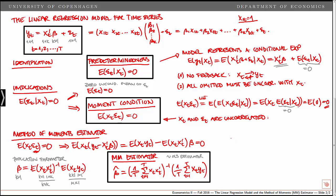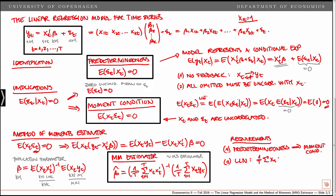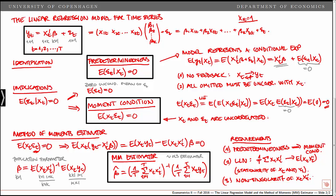Note that there were three requirements. First, we need the assumption of predeterminedness, which implies the moment condition used to derive the estimator. Second, for the sample averages to converge to the population expectations, we need a law of large numbers to hold — that ensures 1/T times the sum of xt xt prime converges to E[xt xt prime], and likewise for the other term. The law of large numbers holds if the data are stationary, meaning both x and y must be stationary. Third, xt xt prime must be non-singular, which rules out perfect multicollinearity in the x variables.